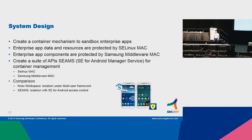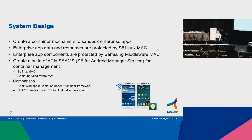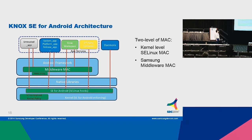SIMS uses two mechanisms: SE Linux mandatory access control and Samsung middleware mandatory access control. SIMS itself can be applied independently and has already been adopted by some of our partners to protect their enterprise apps and resources. In Knox Workspace, isolation is under the Android multi-user framework; SIMS uses access control mechanisms to provide data and resource isolation. This is the big picture of how SIMS plays a role in the overall Knox SE for Android architecture.